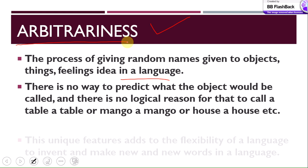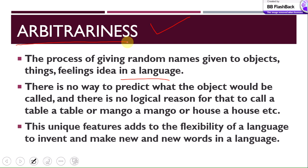This unique feature adds to the flexibility of language — language becomes flexible because you can invent new names. You can make new words in a language because of this property. It enhances the flexibility and reduces the rigidity in a language, because you can randomly give names to objects, ideas, and things. So arbitrariness allows you to make new and new words, which is beneficial for a language.